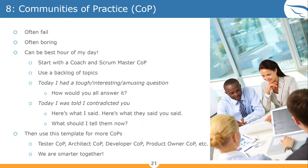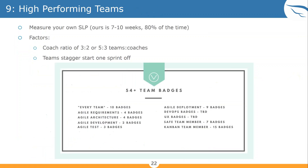For continuous improvement, we put in place a change management system where people can submit requests against any badge — this badge needs to improve, or we're missing a badge altogether. We tie skill growth to it: you can't get to level three unless you've submitted improvement ideas; you can't reach level four unless you've implemented someone else's idea; and you can't reach level five unless other people are implementing your ideas. For communities of practice, start with coaching and scrum master CoPs, have a backlog of topics, and focus on real tactical questions rather than just theoretical ones.